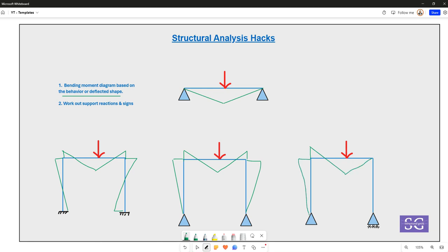But this essentially is wrong. Why is it wrong? Although we have drawn that this particular support can take this moment, it actually cannot because there is no possibility of having horizontal reaction here, as there is no external horizontal reaction. To counter this horizontal reaction, there has to be a reaction from the other side. So the next strategy which is helpful: you need to also work out these support reactions and their signs.